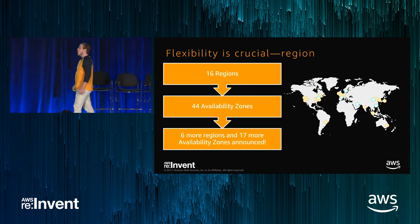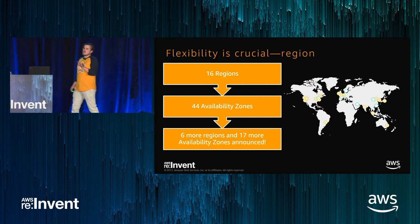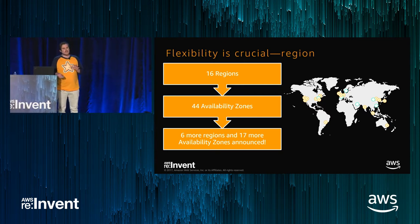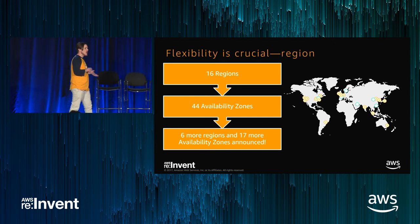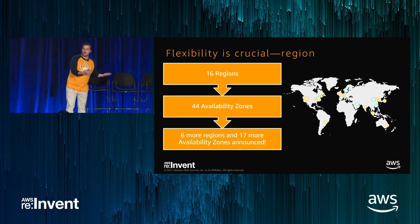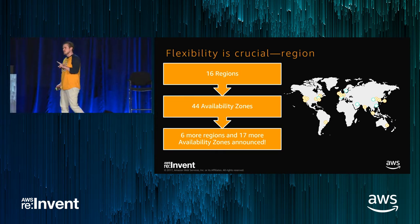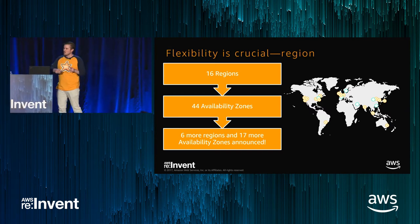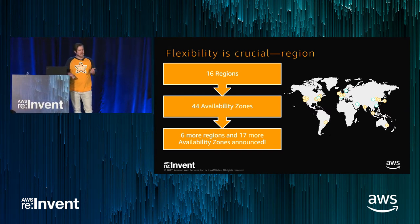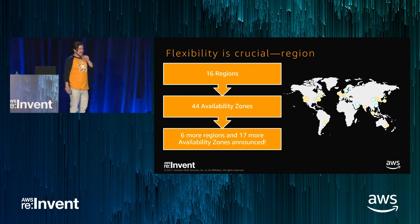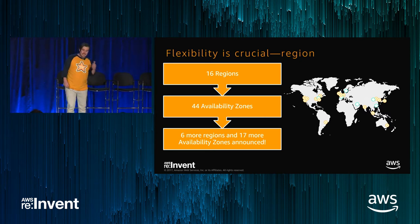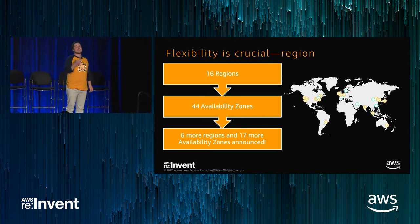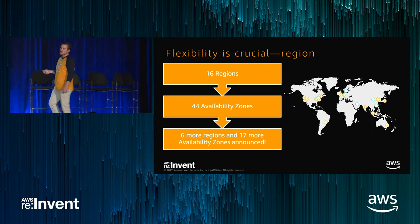Region flexibility is one of the hardest things to do when it comes to running an application on Spot, because you've got to think about: do I move my data? Is it cost-effective? Is my database there? Is my application going to work in a new region? So focus on the first two — instance and time flexibility. But if those don't work for you, then consider region flexibility. There are 16 regions, 44 availability zones, and six more regions and 17 new availability zones announced. If you can't be instance flexible or time flexible, can you be region flexible?